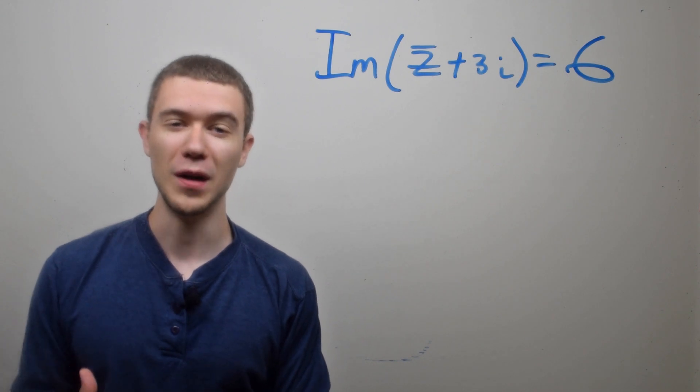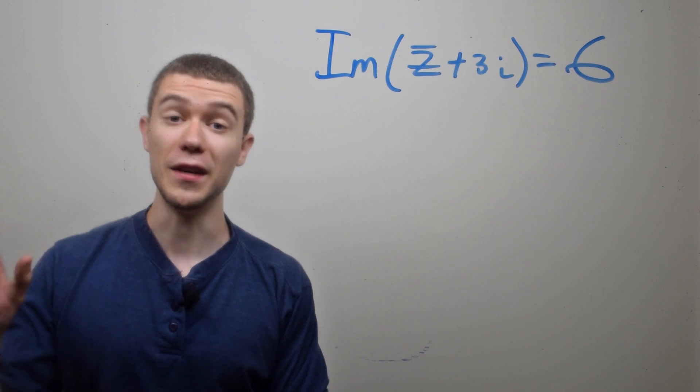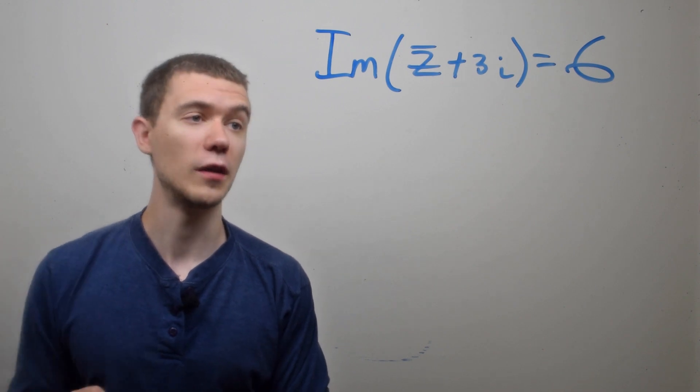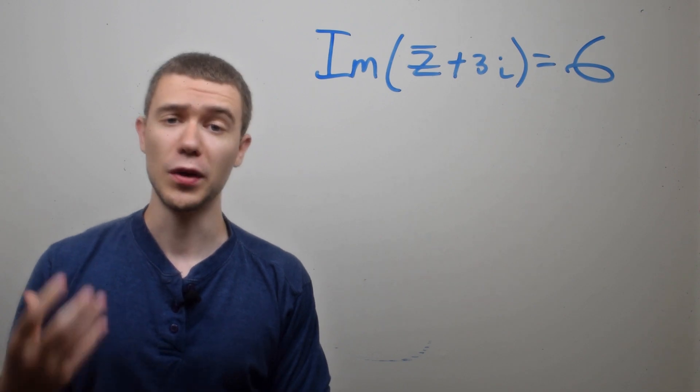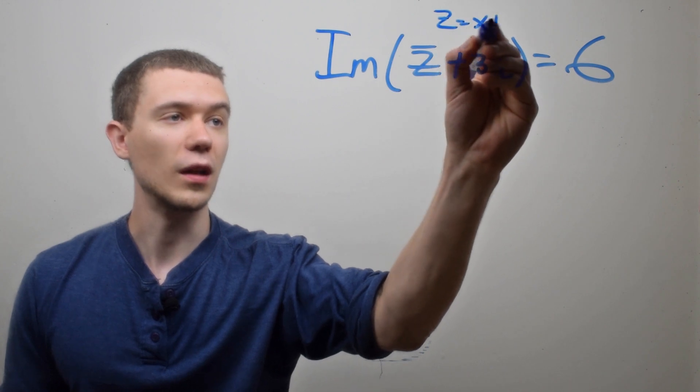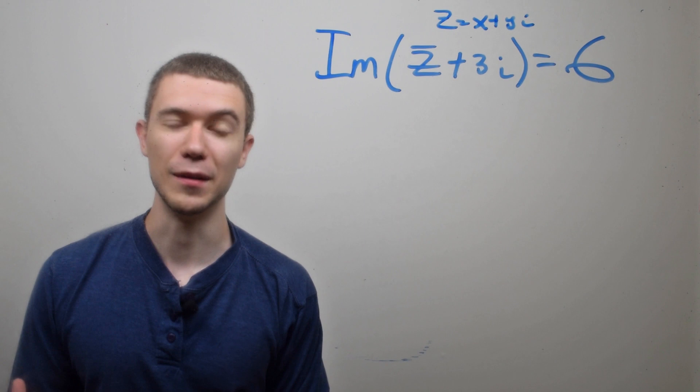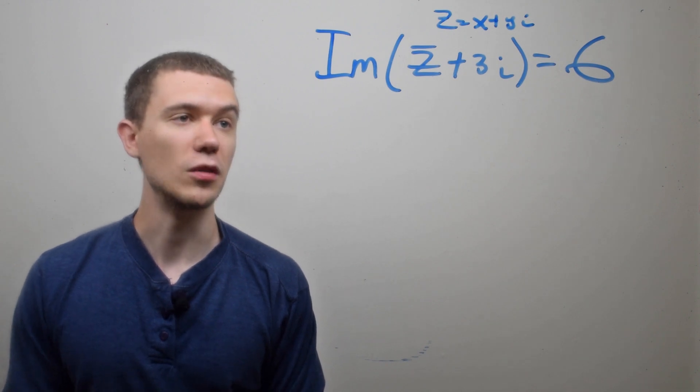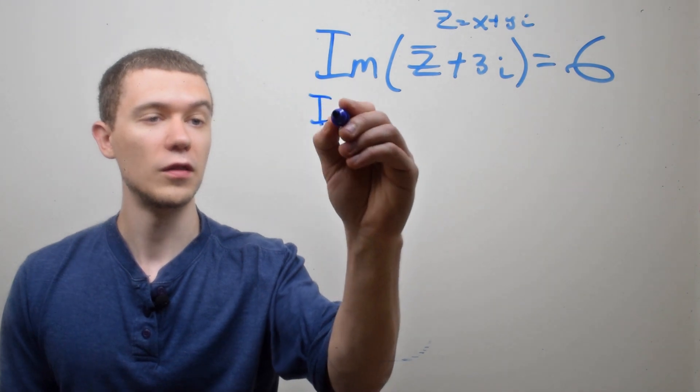Now that I have those definitions out of the way, let's actually do a fun problem. Let's describe the set of points that satisfy this equation: the imaginary part of Z conjugate plus 3i equals 6. To do this, we're going to have to introduce some notation. Let's say that Z equals X plus YI. So we can write any complex number in that form. And let's substitute that where I see Z into this equation.